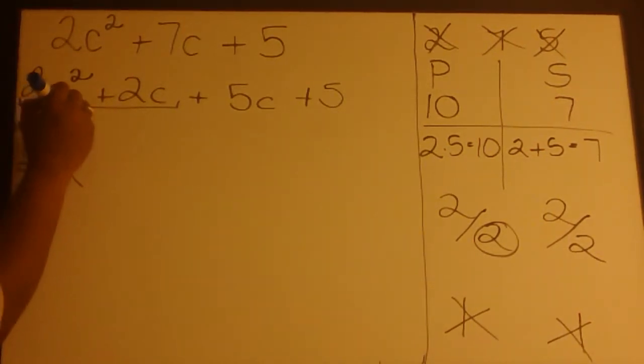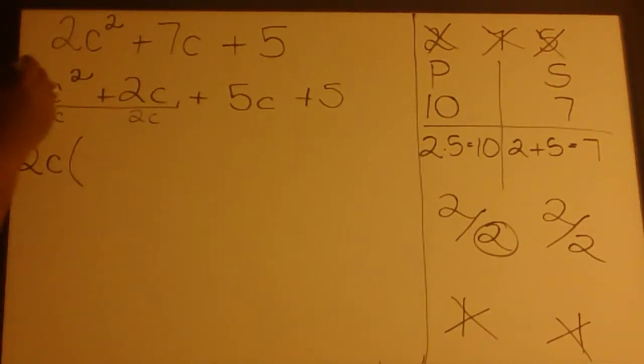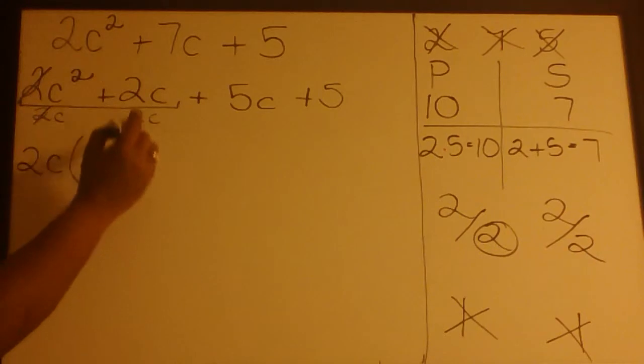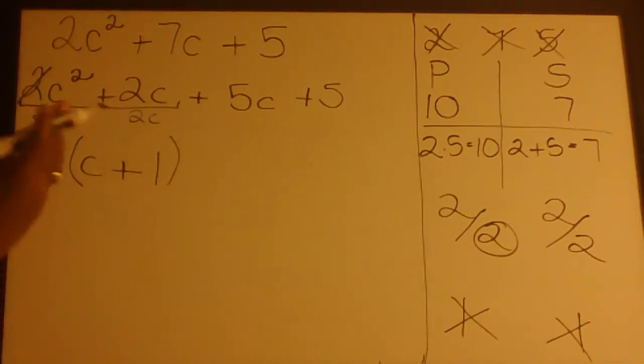Dividing both of these terms by our GCF of 2C, we get these 2's cancel. C squared divided by C is C. Be careful here. 2C divided by 2C is 1. Just like 5 divided by 5 is 1.